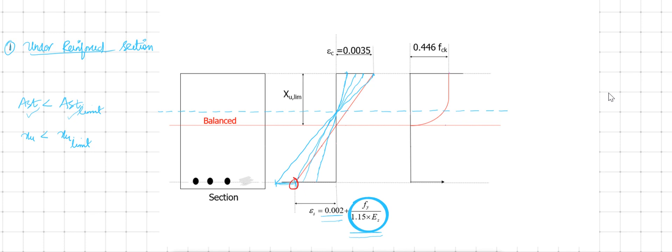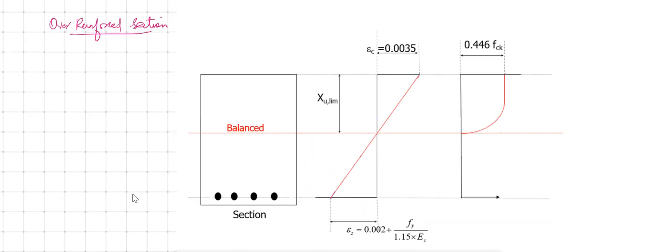A ductile section means there will be sufficient time even if the structure starts to collapse, because ductile failure is not a sudden failure. Now the next type of section is the over-reinforced section.